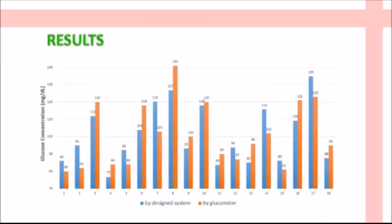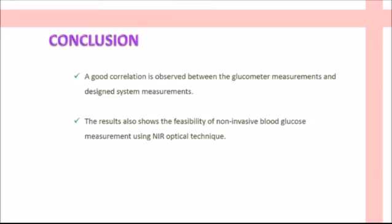After developing the final system, we present these results. The blue line indicates glucose readings measured with our developed system, and the orange line indicates glucose readings measured with a commercial glucometer available in the market. We can observe a good correlation between the readings from our system and the glucometer. In some cases the readings are very close, with 20 to 30 percent accuracy deviation.